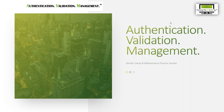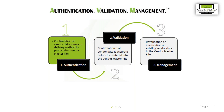Let's talk about my proprietary Authentication, Validation, and Management process that I use for my clients that still have fully manual or partially manual vendor processes to avoid both fraud and regulatory fines. The first step is authentication, which is the confirmation of the vendor data source or delivery method of the vendor documentation. The data source is who is sending; the delivery method can be email, vendor portal, fax, or even hard copy.